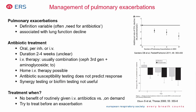A pulmonary exacerbation is defined by several criteria: the patient feels less well, has more sputum, possibly low-grade fever, poor appetite, and change in sputum color — but it is often defined simply as the need for antibiotics. Exacerbations must be treated because they are associated with lung function decline, as shown in studies where one, two, or three exacerbations per year each cause progressively more lung function loss.